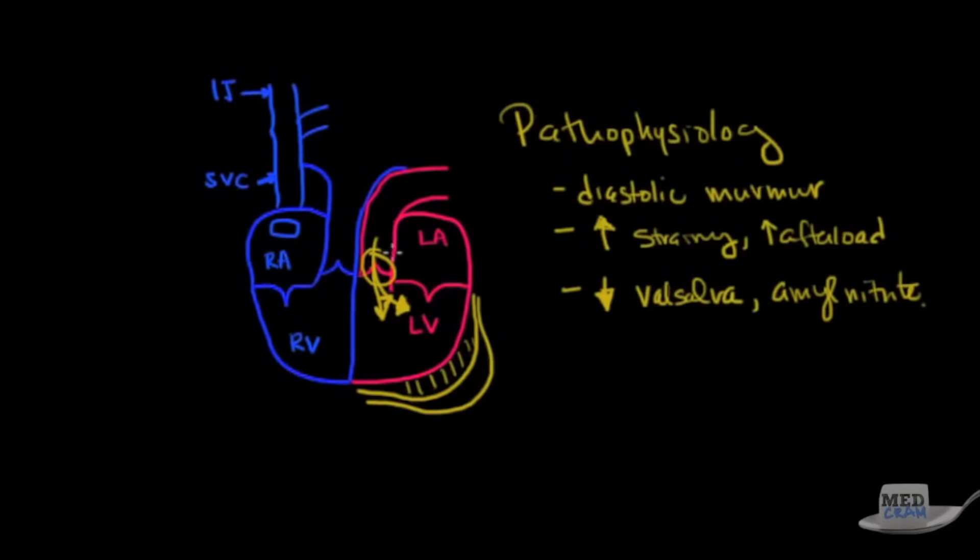Now, as you may recall, this aorta kind of works as what the German word is like a Windkessel. Basically, it expands during systole and then as diastole occurs, it contracts. As it contracts, it kind of ends up like being a pump by itself, pumping the blood forward. However, in aortic regurgitation, instead of that blood going forward, the blood goes backwards and backwards here into the left ventricle.